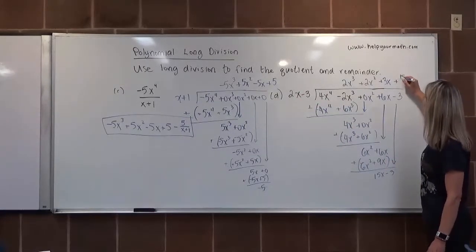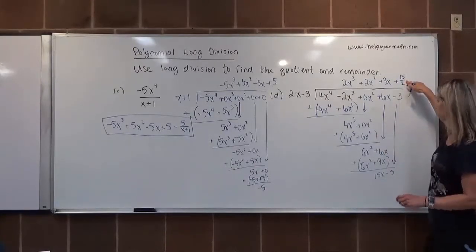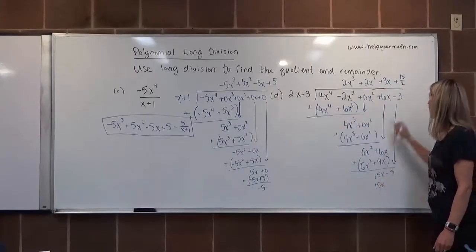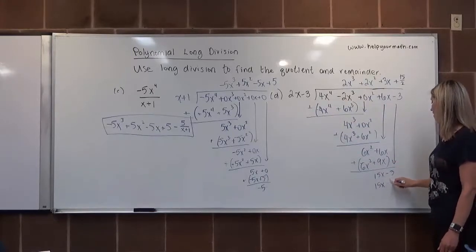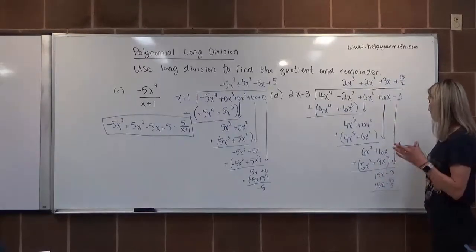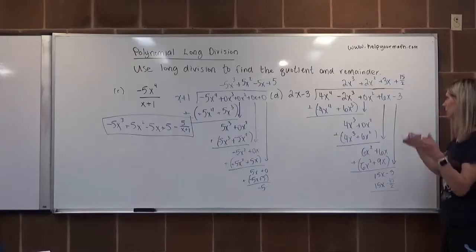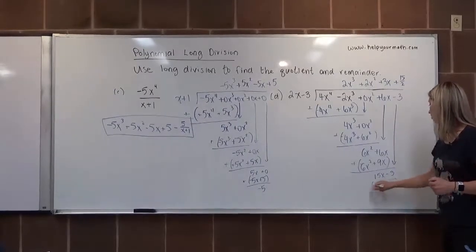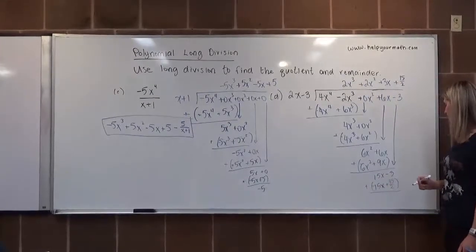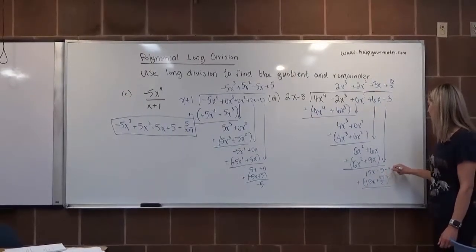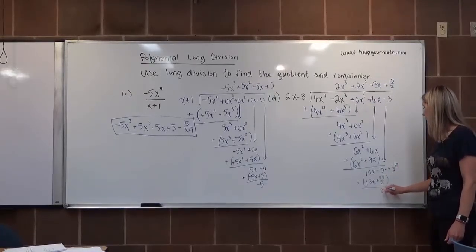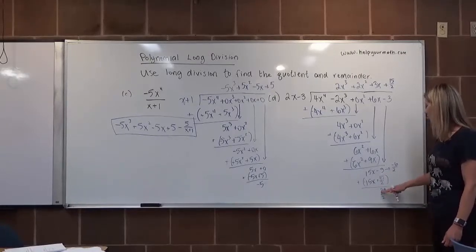So we do have to deal with a fraction. We take 15/2 and multiply it by (2x-3) to get 15x - 45/2. I'd suggest leaving it as an improper fraction because the remainder will also be a fraction. This gets subtracted — 15x and -15x cancel. Then -3 minus (-45/2): converting -3 to -6/2 gives -6/2+45/2 = 39/2. So 39/2 is our remainder.